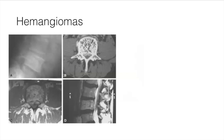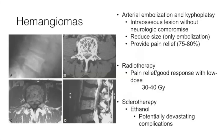Hemangiomas can be seen on x-ray, axial CT, and MRI. They have the classic jail bar appearance, spiculated or popcorn appearance on CT. Treatment is primarily non-operative: arterial embolization and kyphoplasty are reserved for patients without neurologic compromise, with the goal of reducing tumor size and providing significant pain relief.